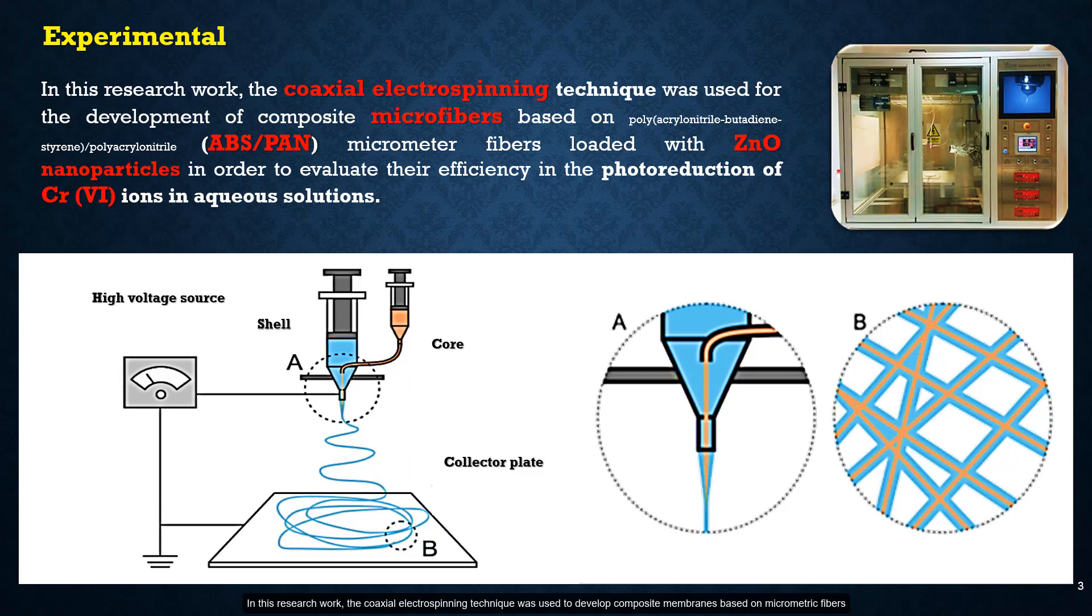In this research work, the coaxial electrospinning technique was used to develop composite membranes based on micrometric fibers of polyacrylonitrile-butadiene-styrene and polyacrylonitrile loaded with zinc oxide nanoparticles in order to evaluate its efficiency in the photoreduction of chrome ions in aqueous solution. The morphological analysis of the fibers was performed by scanning electron microscopy. The chemical composition was determined by Fourier-transform infrared spectroscopy. The crystallinity was analyzed by X-ray diffraction, and the reduction concentration of chrome was measured by the Nesslerization method.